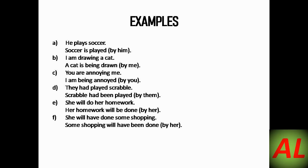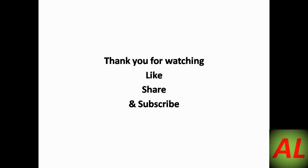The next example: 'She will do her homework' → passive voice uses 'will be' with the verb, and all other rules are followed. In the last example: 'She will have done some shopping' → 'Some shopping will have been done by her.' Here 'will have' in active voice has been changed into 'will have been' in passive voice.